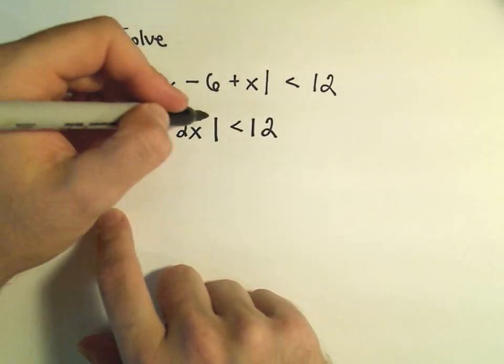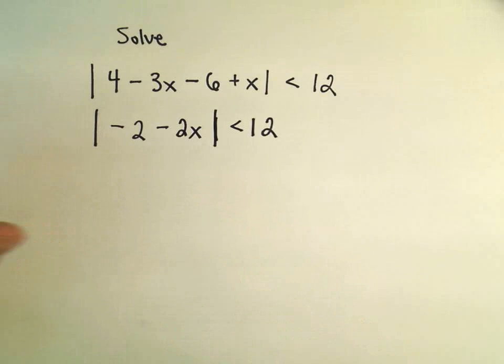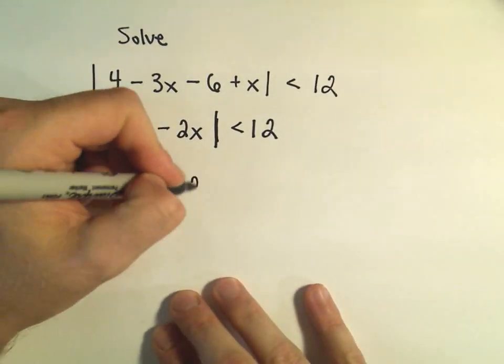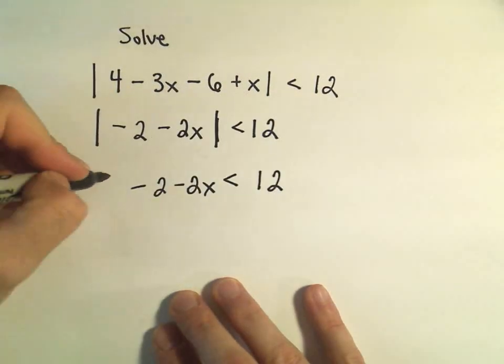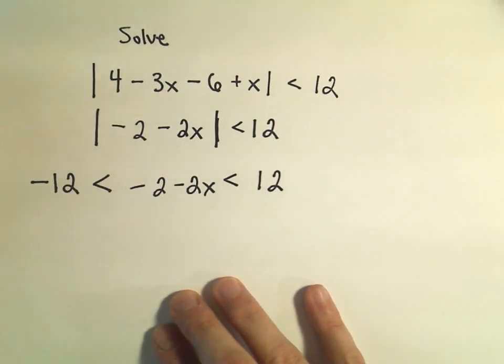And again, to solve this type of inequality, absolute value inequality, we just remove the absolute value. We make it less than 12, but then we also make it greater than negative 12.